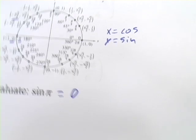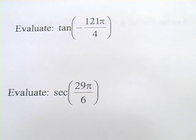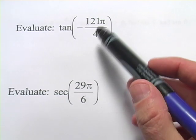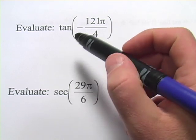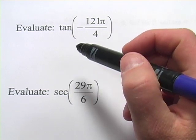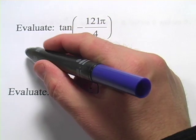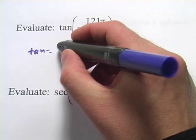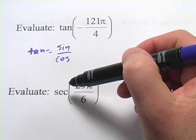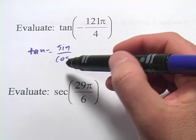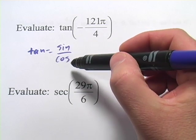They get a little harder. Let's look at this one. It says to evaluate the tangent of negative 121 pi over 4. And we've got a few things going on here. First of all, tangent is not on the unit circle. But tangent is sine over cosine. And we can get those values from the x and y coordinates on the unit circle. So we can figure out tangent if we get the sine and the cosine.